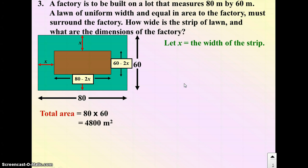So I want to use that information to solve for the value of x. We're told that the lawn is uniform width and equal in area to the factory. So if the total area of the whole thing is 80 times 60, or 4,800 square meters, the area of the factory must be the same as the area of the lawn. That means I can find the area of those by dividing the total area by 2. So the area of the factory should be 4,800 divided by 2, or 2,400 square meters.